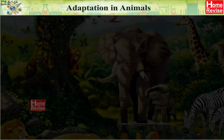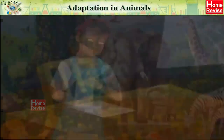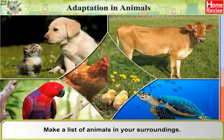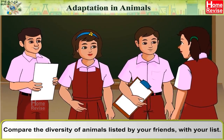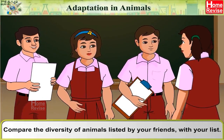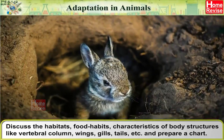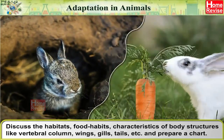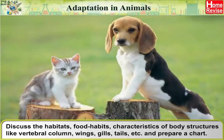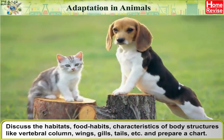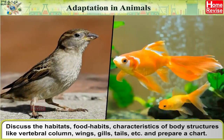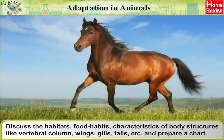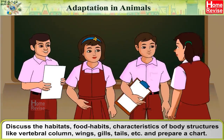Adaptation in Animals. Make a list of animals in your surroundings and compare the diversity of animals listed by your friends with your list. Discuss the habitats, food habits, and characteristics of body structures like vertebral column, wings, gills, tails, etc., and prepare a chart.